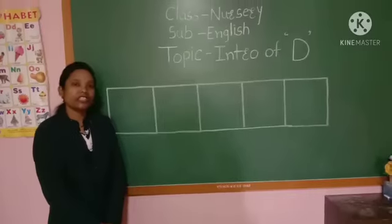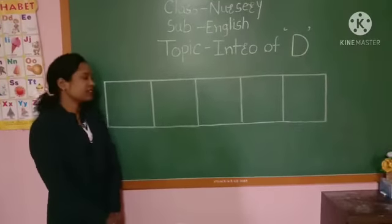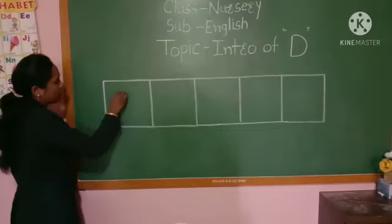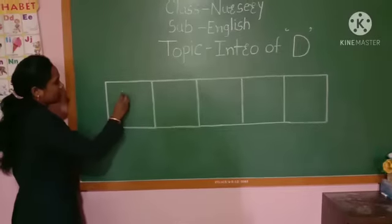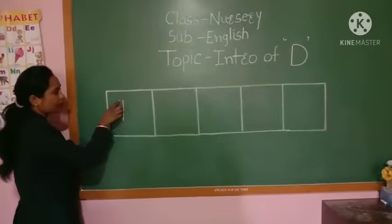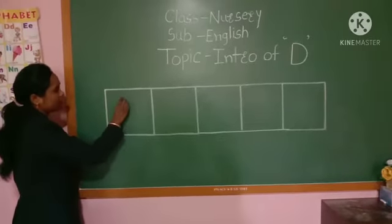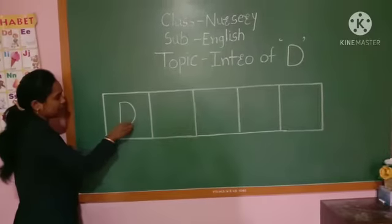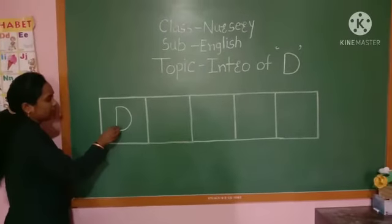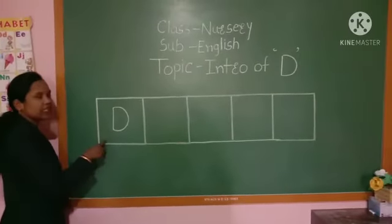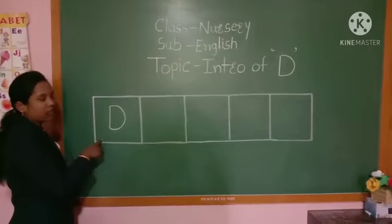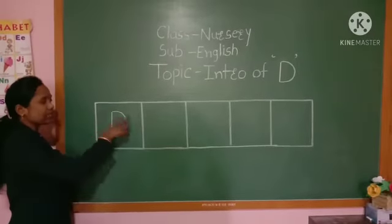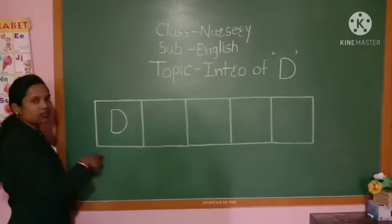Now I will teach you how to write D. See. Draw a standing line. Then, from the top of the standing line, draw a half curve like this. Now it becomes D. While writing D, we are using a right side half curve.